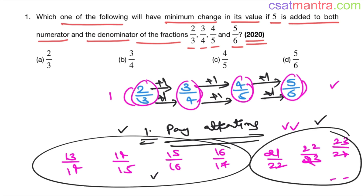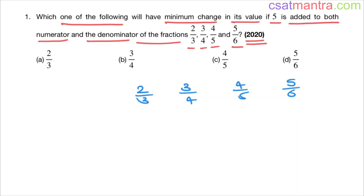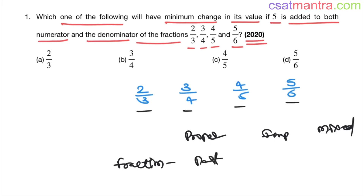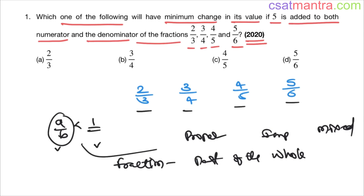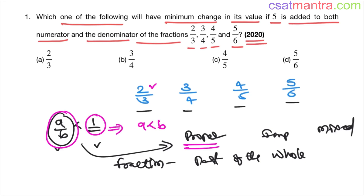These are proper fractions. A fraction a/b is called a proper fraction when it is less than 1 — that is, a < b, meaning numerator is less than denominator. This is because a/b < 1 implies, multiplying both sides by b, that a < b.